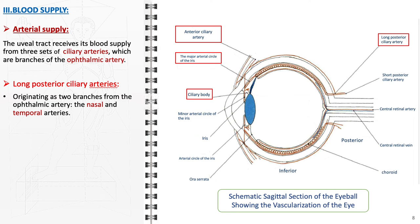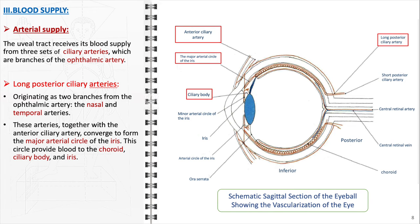The long posterior ciliary arteries, originating as two branches from the ophthalmic artery—the nasal and temporal arteries—these vessels, together with the anterior ciliary arteries, converge to establish the major arterial circle of the iris. This circle is crucial as it supplies the choroid, ciliary body, and iris.